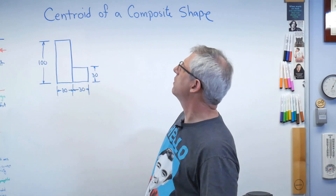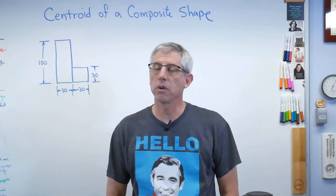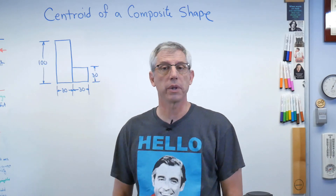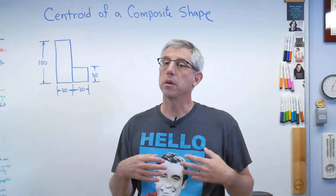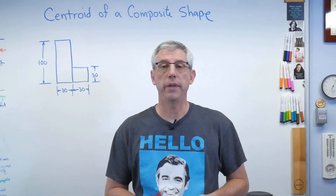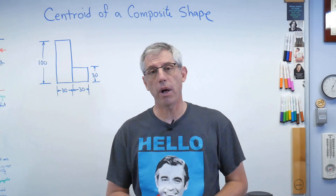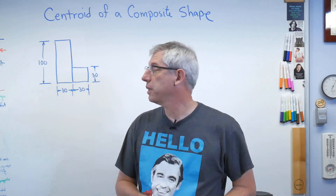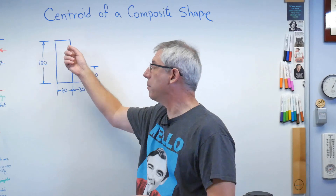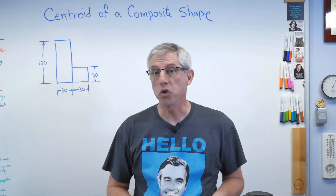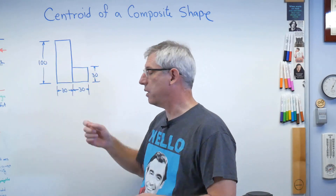Now, this sounds pretty dry. The reason I use those words is because these are the words you normally see in a textbook, and a composite shape is just one that's made out of several smaller shapes. So the really simple example I have here is like an L shape, and it's made out of two boxes — this box and this box.